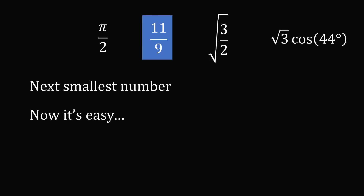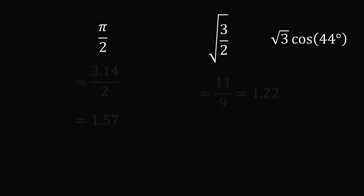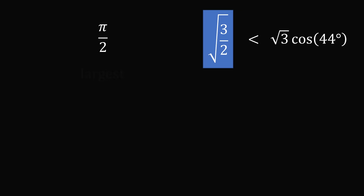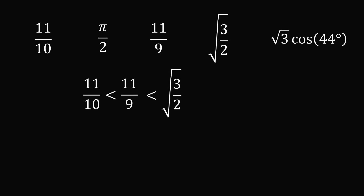From here, the remaining calculations are easy from what we've already done. Pi over 2 is approximately 1.57, whereas the other two remaining options were close to 11 over 9 at 1.22, so pi over 2 is much larger. We know the square root of 3 times cosine of 44 degrees is larger than the square root of 3 over 2, so the square root of 3 over 2 is next smallest. Putting it all together: 11 over 10 is the smallest, followed by 11 over 9, then the square root of 3 over 2, then the square root of 3 times cosine of 44 degrees, and the largest is pi over 2.